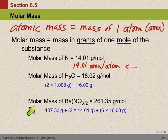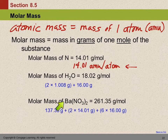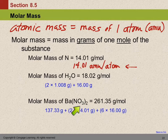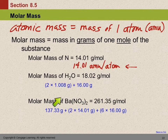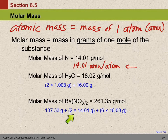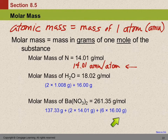For something more complicated — barium nitrate — we need to understand what the formula means. There's one barium and two nitrate units, which means two nitrogens and six oxygens. To find the mass of one mole, we find the mass of one mole of barium, two moles of nitrogen, and six moles of oxygen, and add them all up to get 261.35 grams per mole.